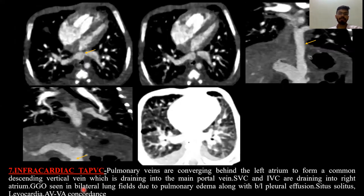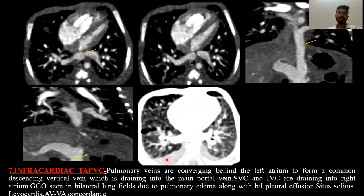The next case is infracardiac TAPVC. The pulmonary veins converge behind the left atrium, forming a common descending vertical vein which drains into the portal vein. The SVC and IVC are draining into the right atrium. Ground-glass opacities are seen in bilateral lung fields due to pulmonary edema, along with bilateral pleural effusion. The situs is solitus with levocardia and AV-VA concordance.